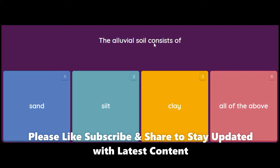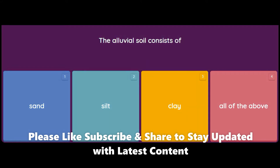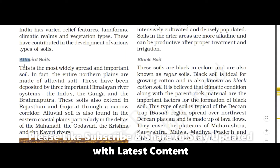The alluvial soil consists of: sand, silt, clay, or all of the above? The answer is all of the above, because alluvial soil consists of sand, silt and clay — all three of them in various proportions. Let's learn more about this, which is important from your exam point of view.